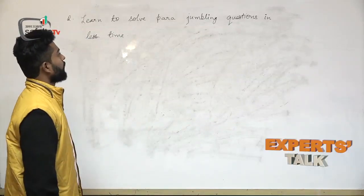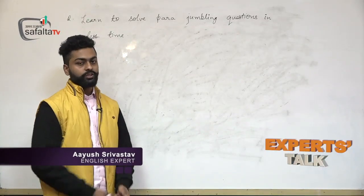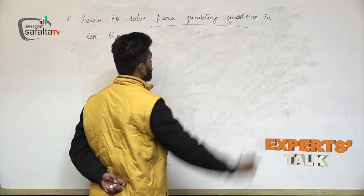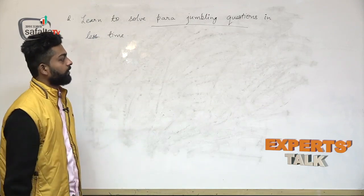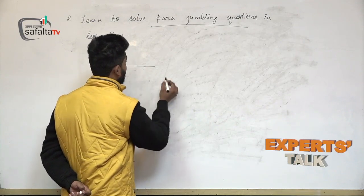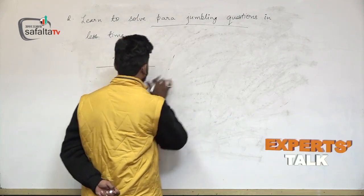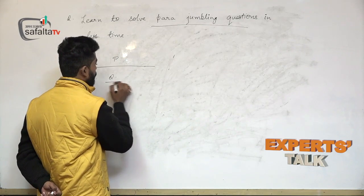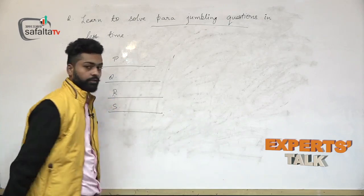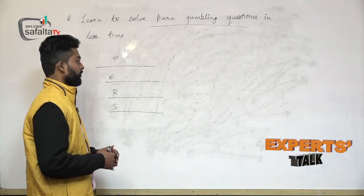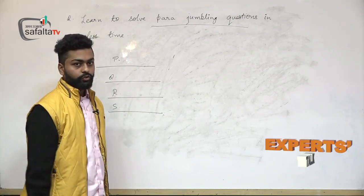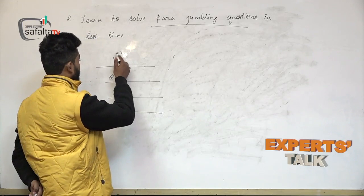Learn to solve para jumbling questions in less time. Para jumbling questions are those questions in which four or five sentences are given. Suppose there is a sentence part P, then a second sentence Q, a third sentence R, and a fourth sentence S. Four sentences are given named P, Q, R, and S, and you have to arrange these sentences.